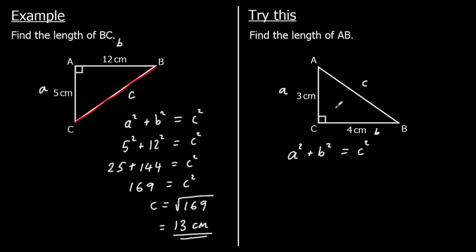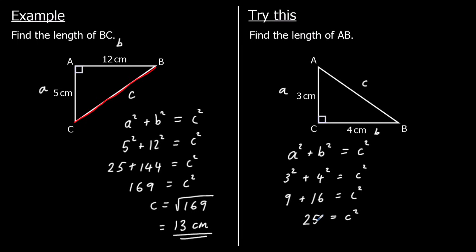So we know that 3 squared plus 4 squared equals c squared. 3 squared is 9, 4 squared is 16. So 9 plus 16 equals c squared, which is 25. To get c by itself, we square root both sides. So c is the square root of 25, which is 5 centimeters. Because 3 squared plus 4 squared equals 5 squared.